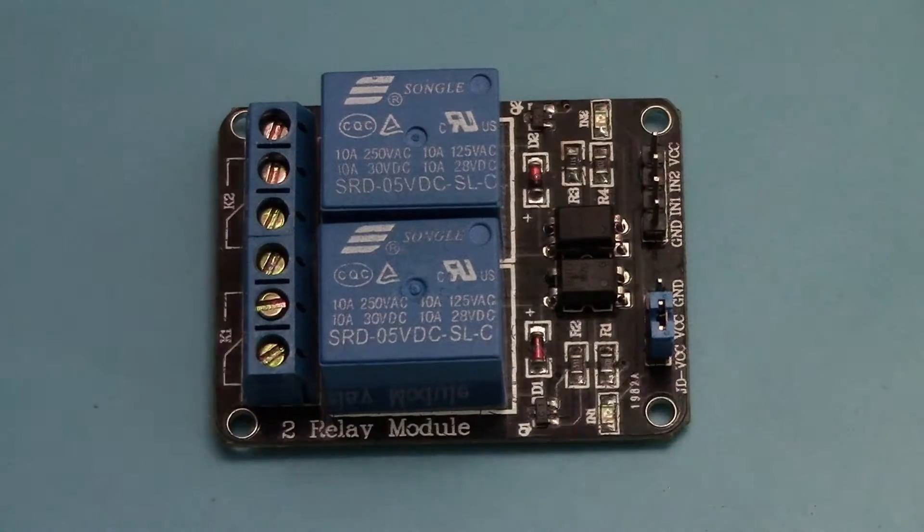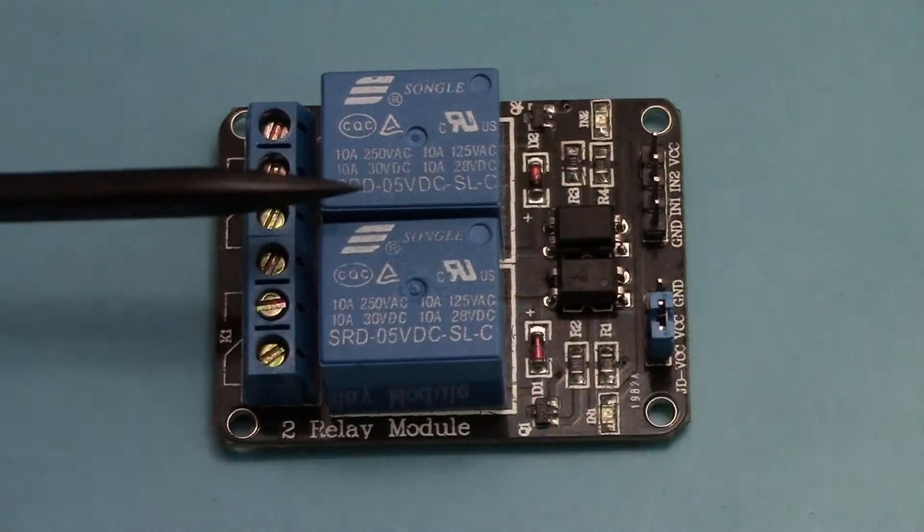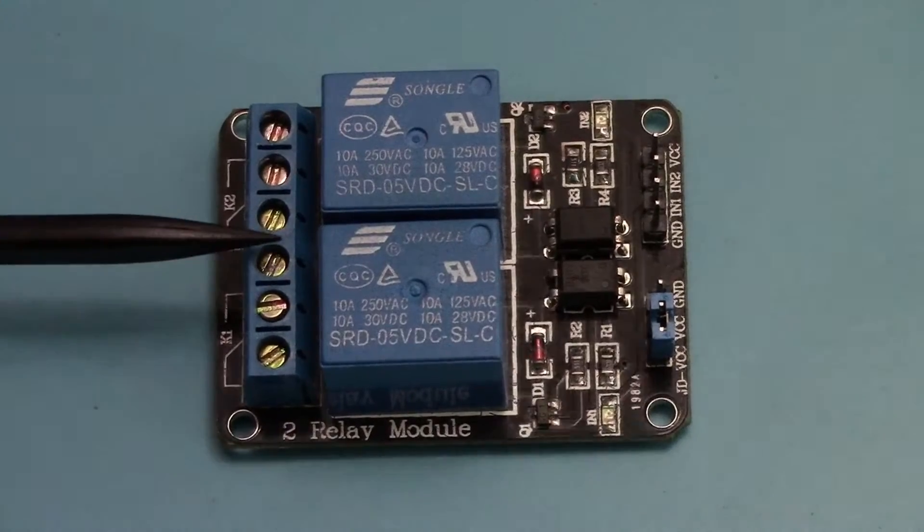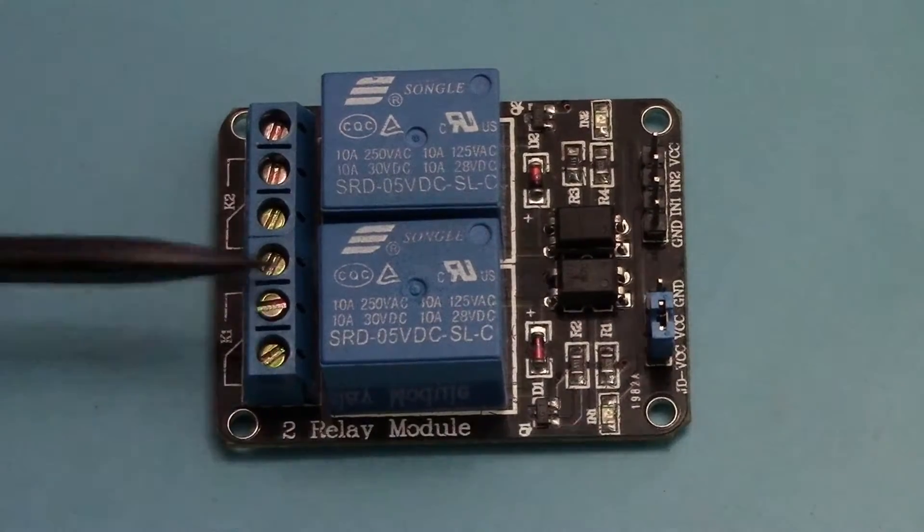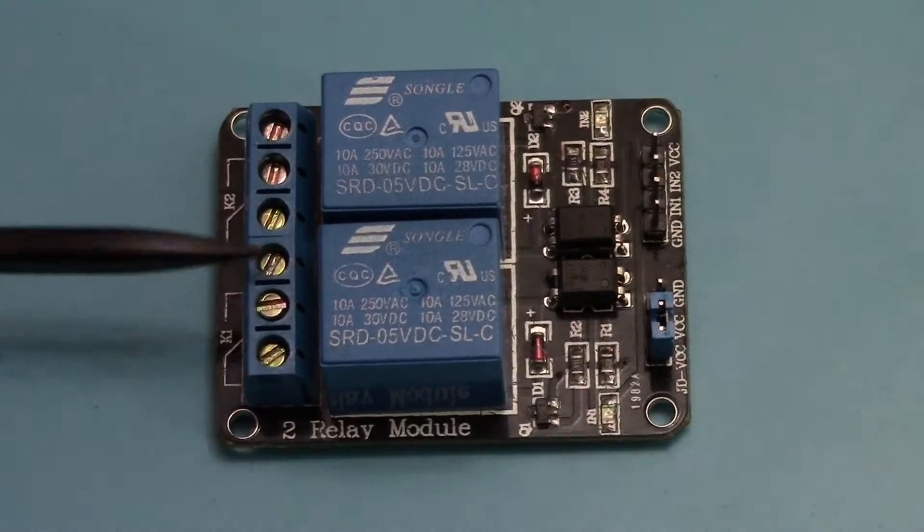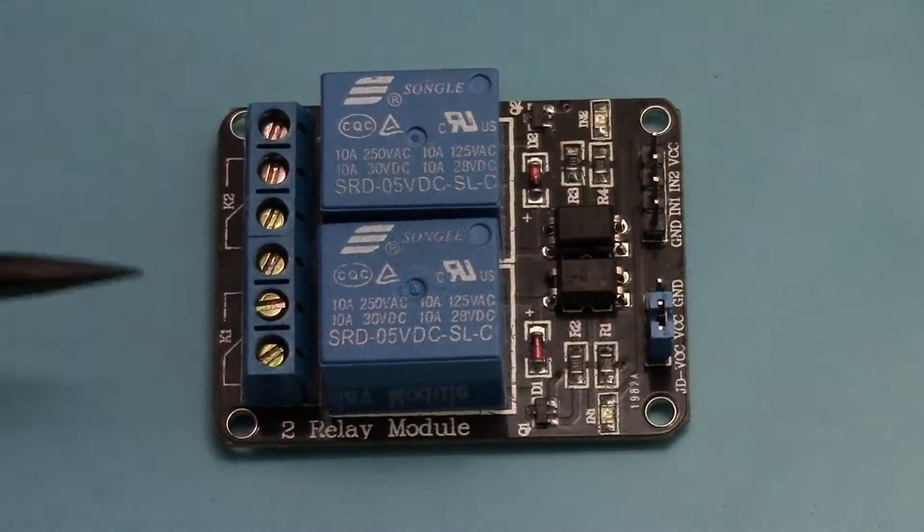Now for a little bit more specifics on how we're going to connect this up later on in our circuit. You'll see we have two channels here so we're going to focus on one channel. The first three header pins here belong to this relay and of course these three are going to belong to that relay.